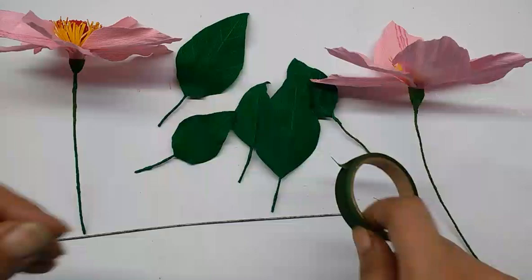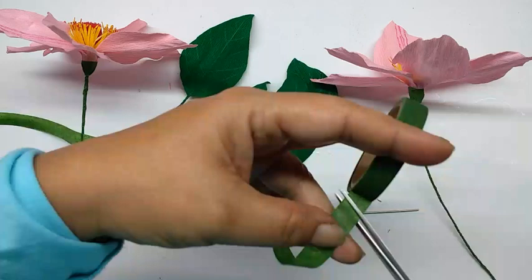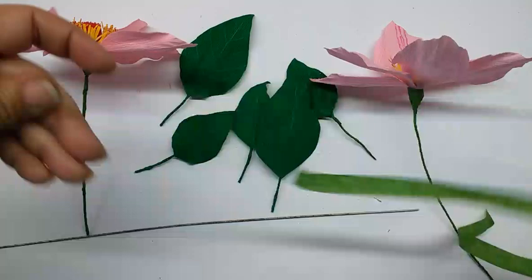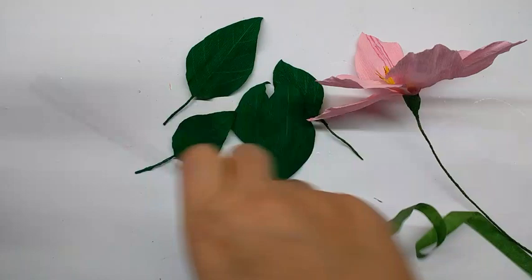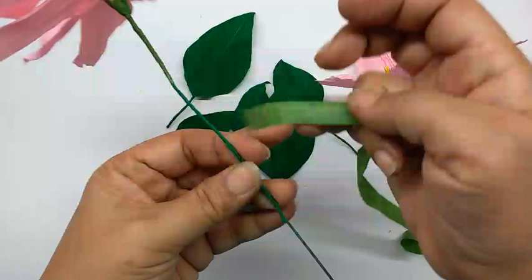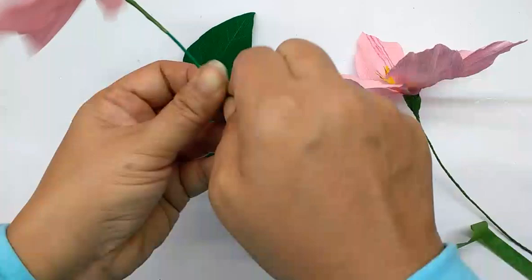Now take the green floral tape, pull out a long piece, and stretch it. I've made two flowers, you can make more. First just hold the flower stem next to the thick wire and start winding the tape on it, just a little.